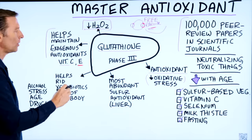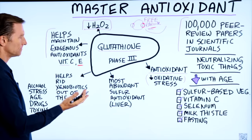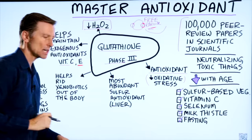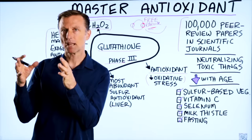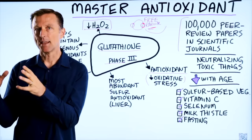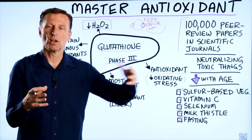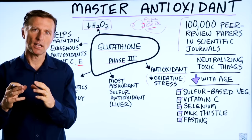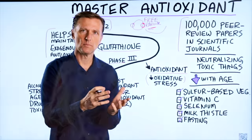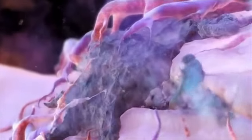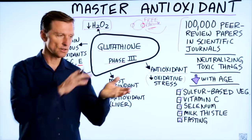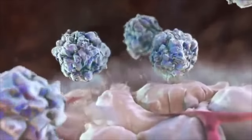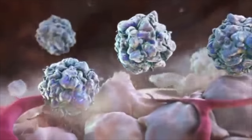Glutathione not only acts as an antioxidant, it also helps in detoxification. There are three phases of detoxification — phase one, phase two, phase three — where your body will take a poison and through different enzyme reactions, break it down into a harmless particle, then get rid of it through either the skin, the kidney through urine, or the bile through the liver and intestine. Your body is constantly trying to get rid of things that aren't good for it.